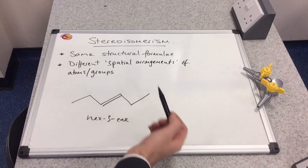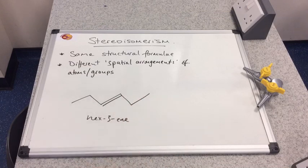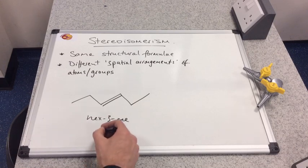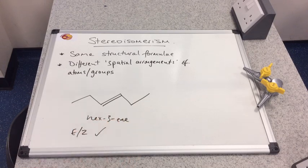Let's look at this one. Hydrogen, CH2CH3. So we've got different things on each carbon of the double bond. So yes, E/Z is possible.